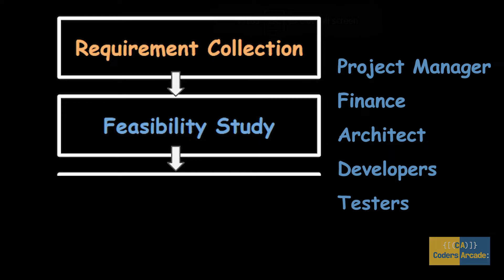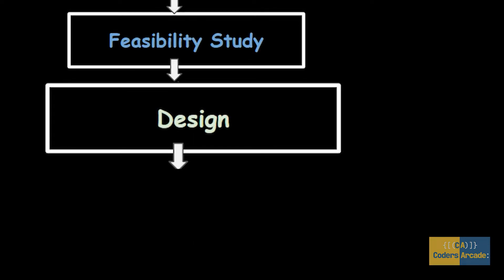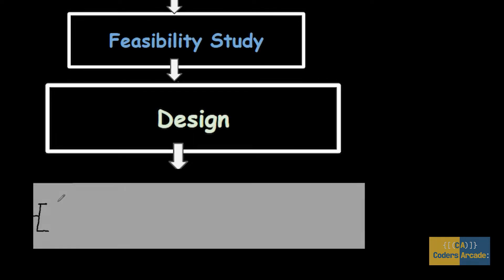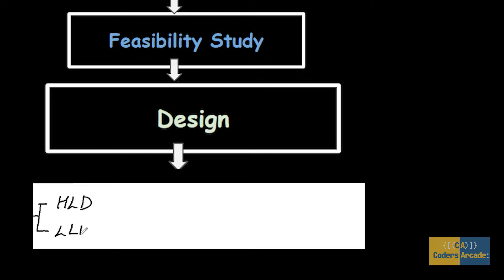Once the Project Manager is satisfied and says we have everything, let's approve — once the project is approved, it will go to the next phase called Design. In Design, there are two types: HLD and LLD.